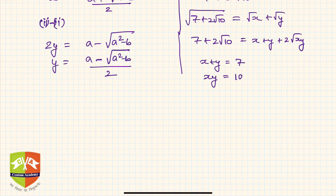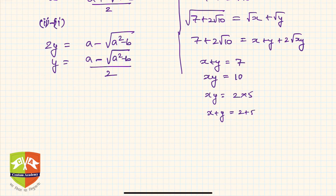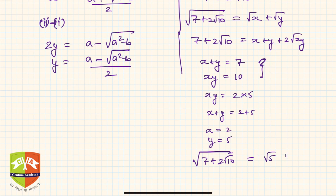We need two numbers whose product is 10 and sum is 7. If we take xy = 2 × 5, then x + y = 2 + 5 = 7, and both equations are satisfied. So x = 5 and y = 2. Therefore √(7 + 2√10) = √5 + √2. That is the solution.